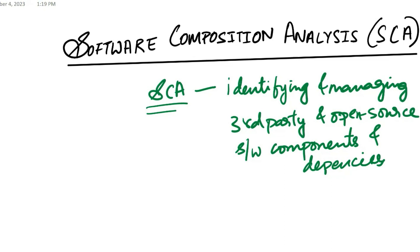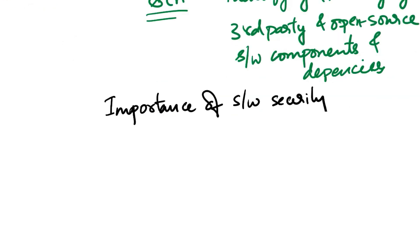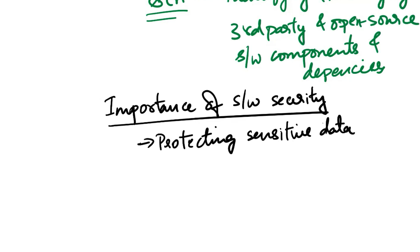Before talking more about software composition analysis, let's try to understand the importance of software security and the presence of third-party dependencies in modern software development. Importance of software security: First is protecting sensitive data. Software often deals with sensitive user data, financial information, personal details, and more.